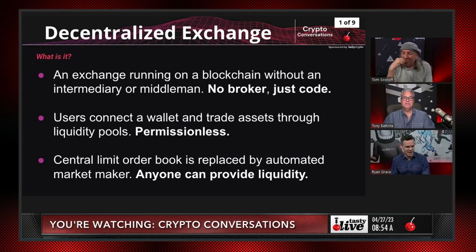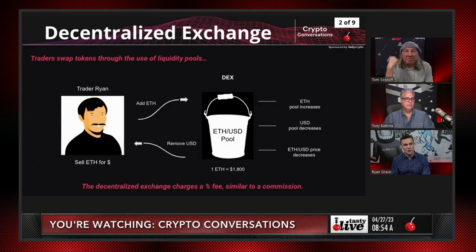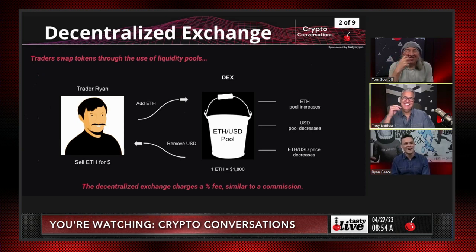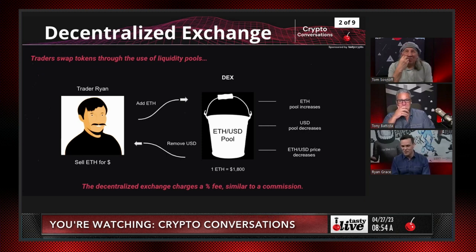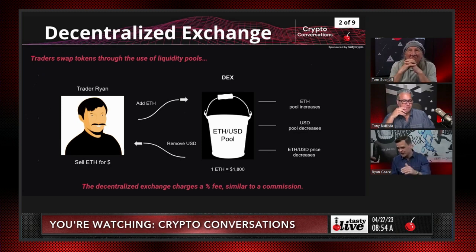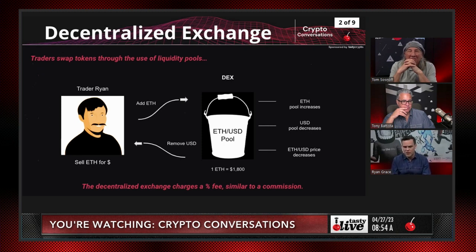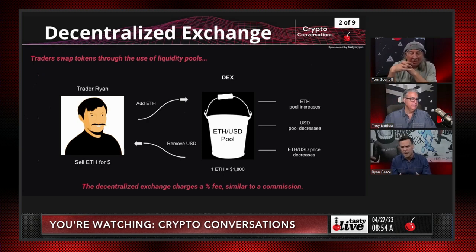Let's jump to the next slide and look at a better visualization of what we're talking about. So we've got Trader Ryan up here — that's back when I had this stash. I have Ethereum and I want to sell it for dollars. We talked about a liquidity pool — I've connected my wallet here, and what you're actually doing is you're adding Ethereum tokens to the pool. You're removing a US dollar stablecoin, or any other token. Two different cryptos could be tokens representing assets — you're transacting through this code base and through this pool.